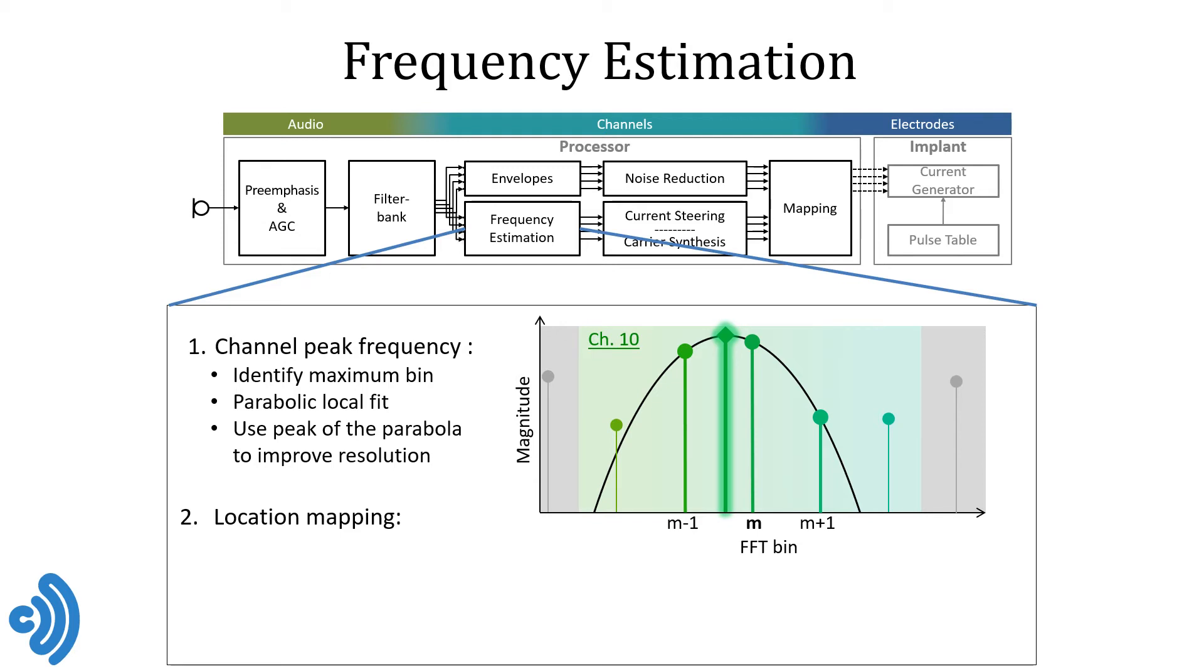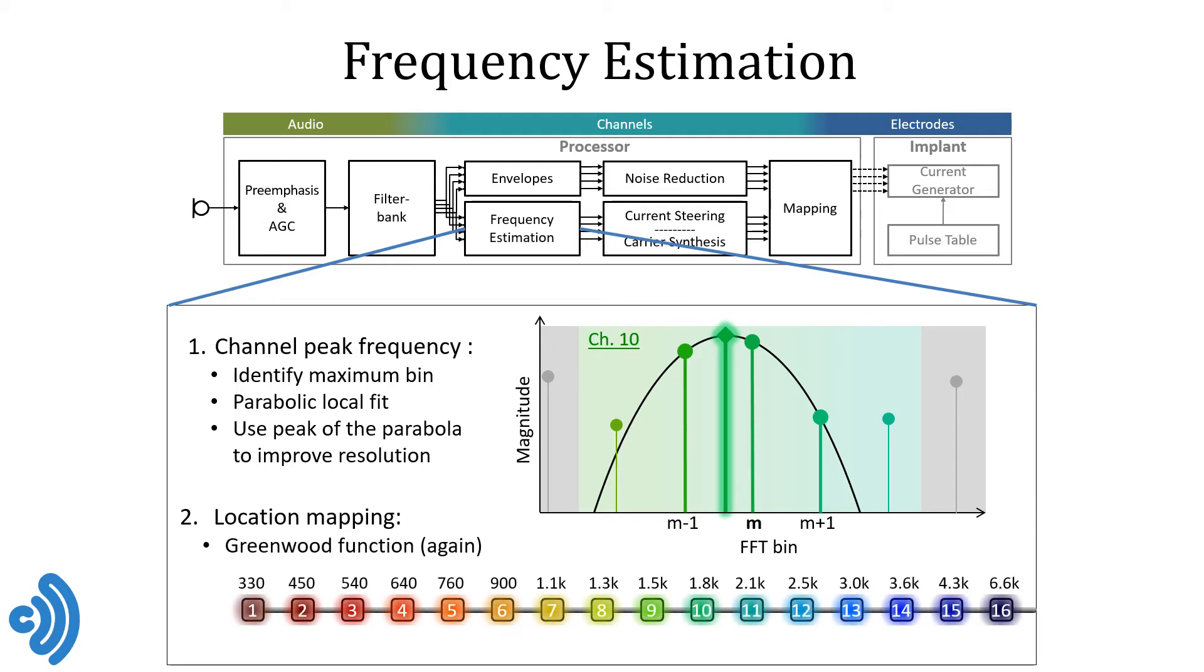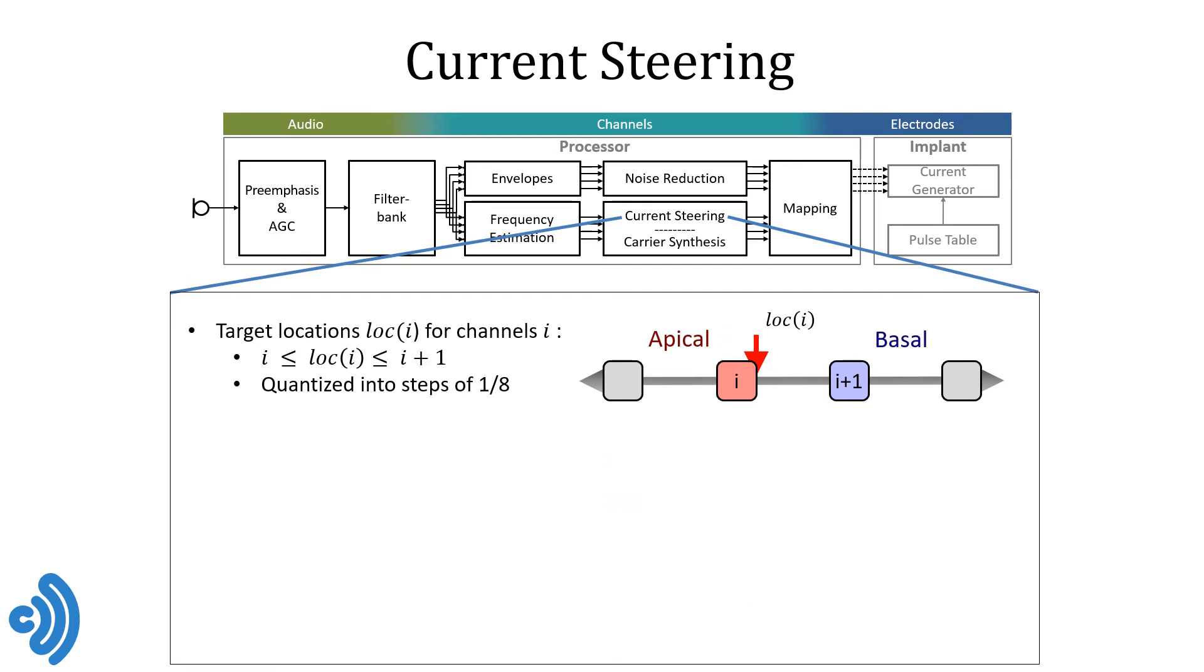From here on, it's easy. We can use the Greenwood frequency place mapping again, but this time the other way around to figure out where in between our electrodes the peak frequency is naturally represented. In this example here, it turns out to be located halfway in between electrodes 10 and 11 and we call this value of 10.5 the peak location for channel 10.